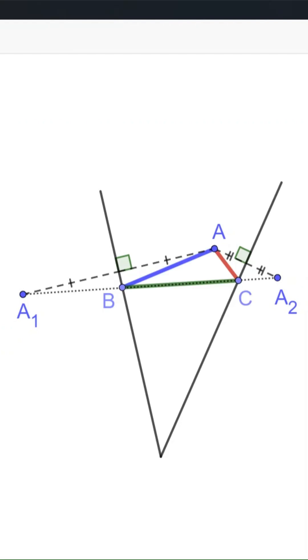Connecting A1 and A2, the intersections with the angle's sides will be the points B and C.